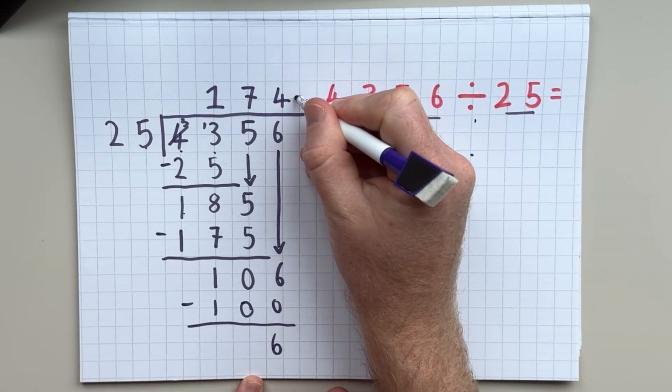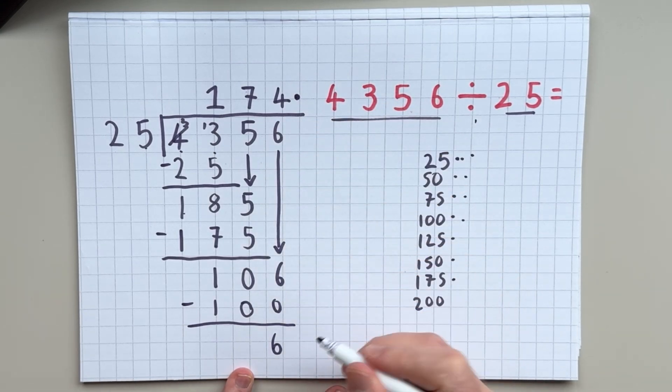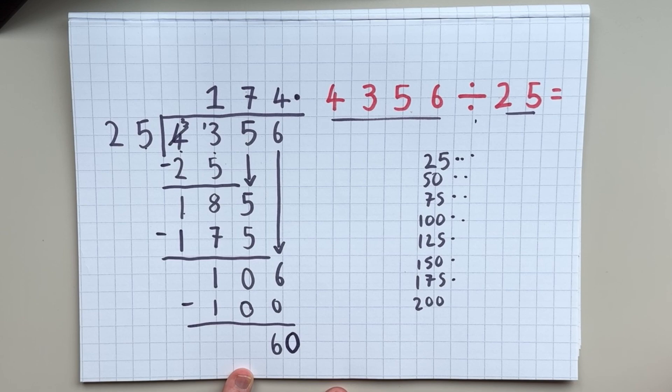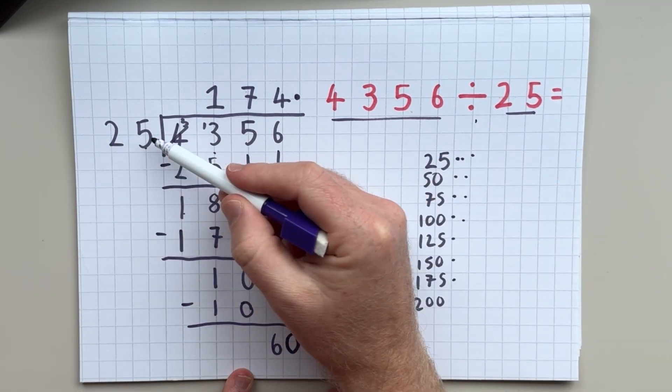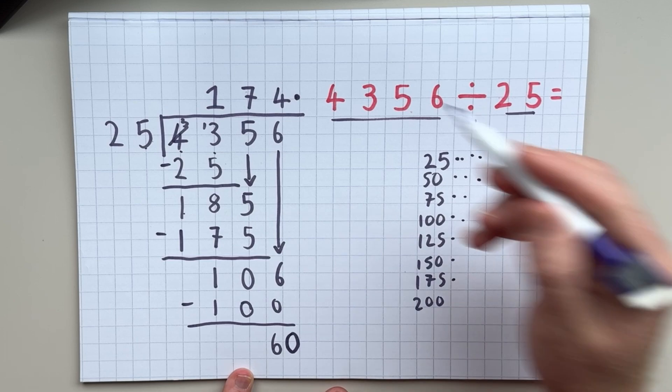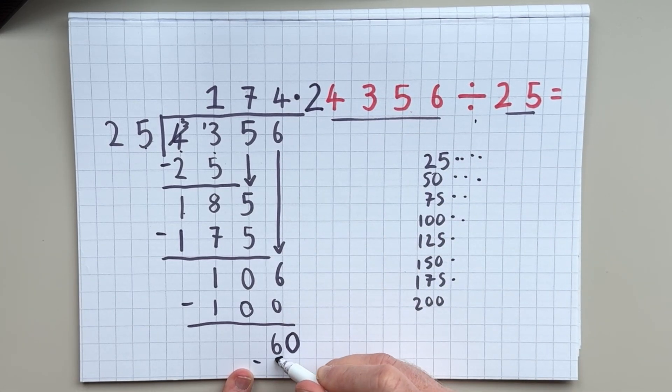Now with that 6, what I'm going to do is I'm going to put a decimal point. And I'm going to add a 0 next to it. And then I'm going to ask how many 25s in 60. The answer is one, two. And I'm going to take away two 25s, which leaves me with 10.